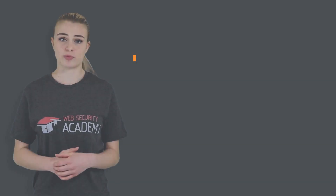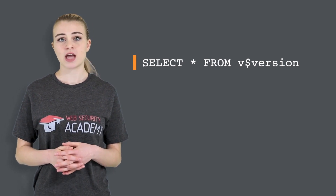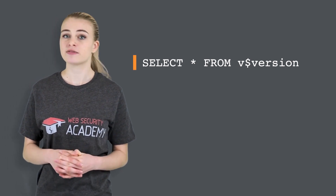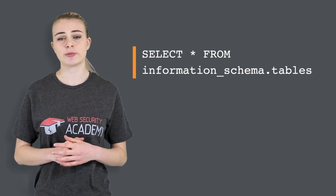When you've discovered an SQL injection vulnerability, it's generally useful to obtain some information about the database itself. This information can often pave the way for further exploitation. You can query the version details for the database — the way this is done depends on the database type, so you can infer the database type from whichever technique works. For example, on Oracle, you can execute this query to show the database version. You can also determine what database tables exist and which columns they contain. For example, on most databases, you can execute this query to list the tables in the database.